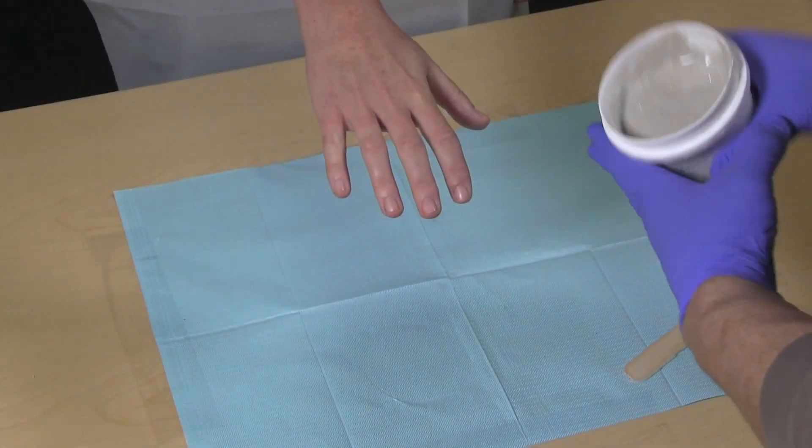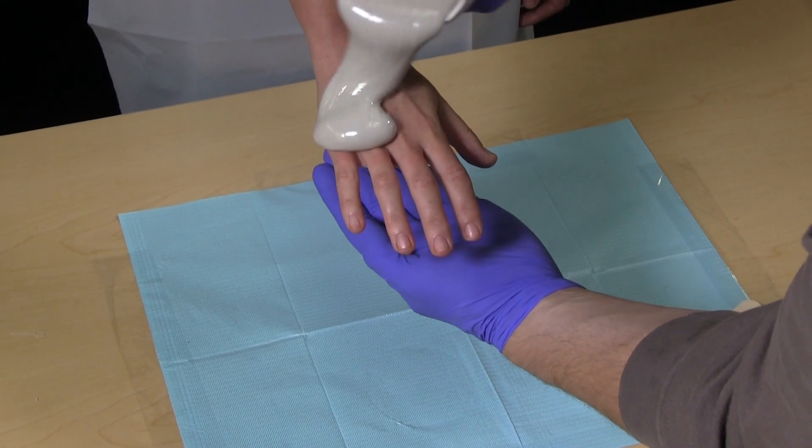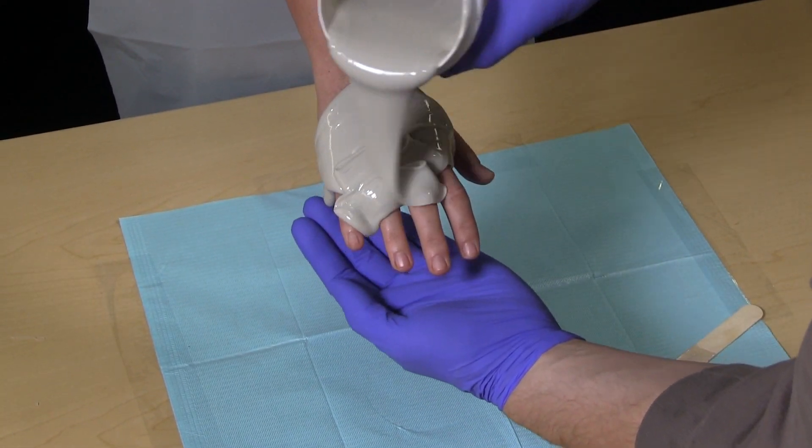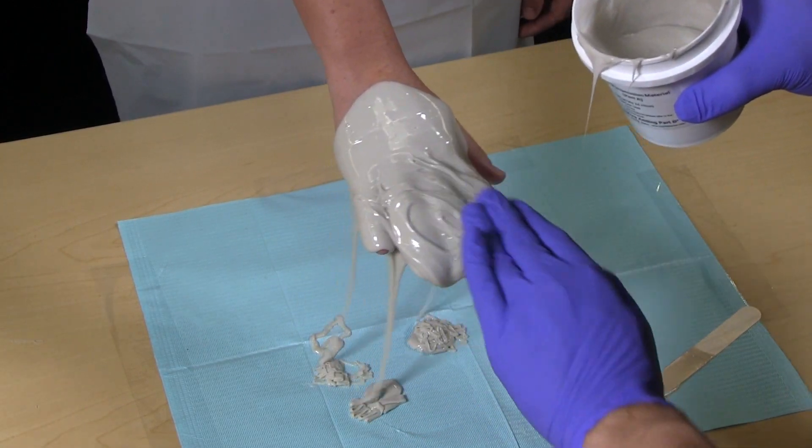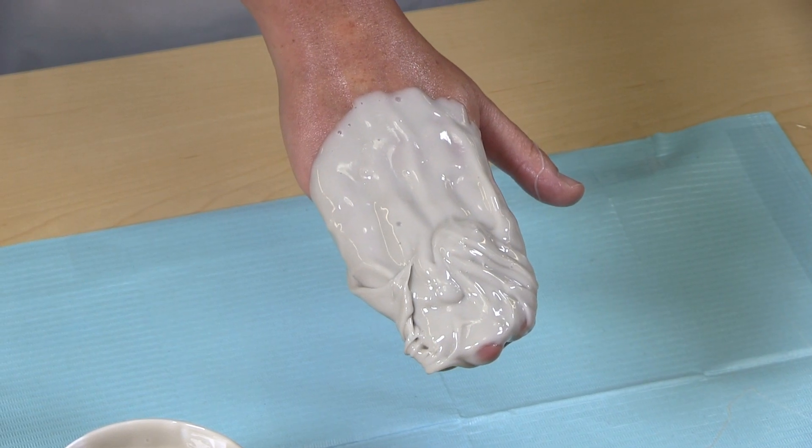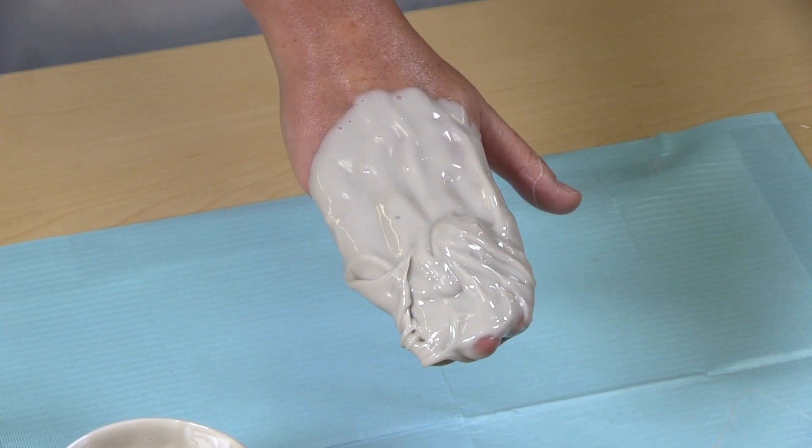Apply the activated impression material generously to the customer's hand. This should be done quickly and thoroughly. Do not allow the patient to strain the fingers or other unnatural positions. Make sure the impression material covers the hand up to the thumb webbing.